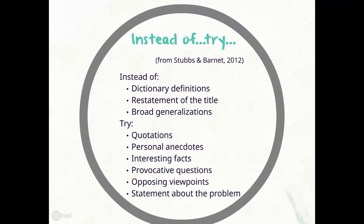In the same vein, Stubbs and Barnett, authors of The Little Brown Reader, caution against using dictionary definitions, a restatement of the title of the essay, or broad generalizations. All three approaches are simply boring. Instead, they suggest such tactics as incorporating quotations, providing a personal anecdote, highlighting an interesting fact or statistic, asking a provocative question, looking at an opposing viewpoint, and stating that a problem exists.